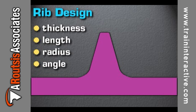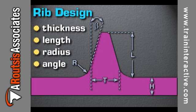There are four important factors in rib design. These are thickness, length, radius, and angle.